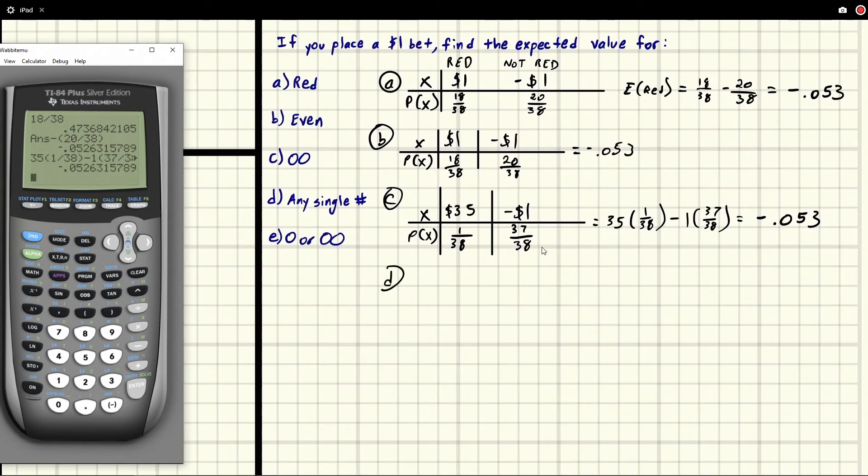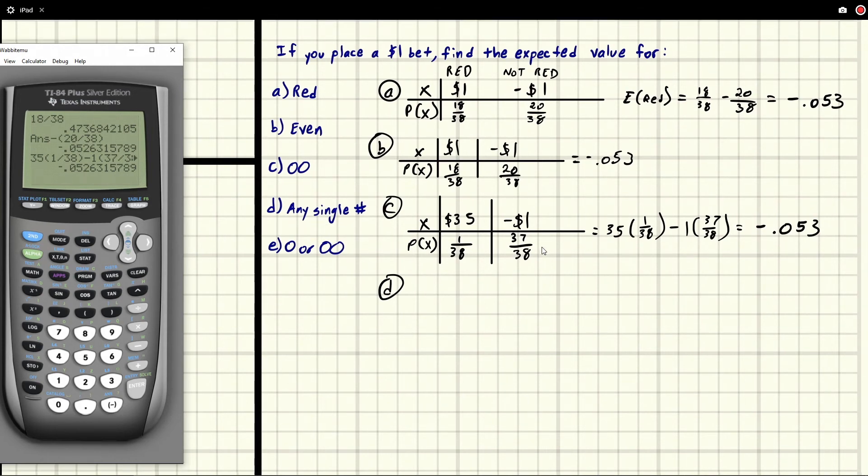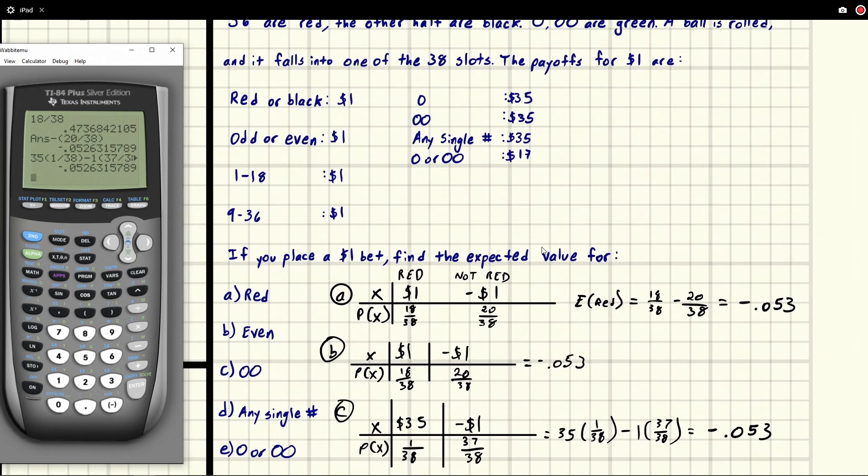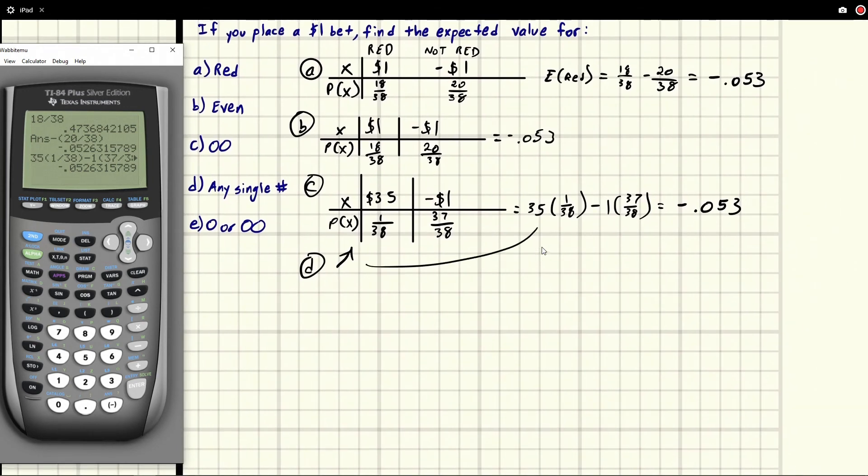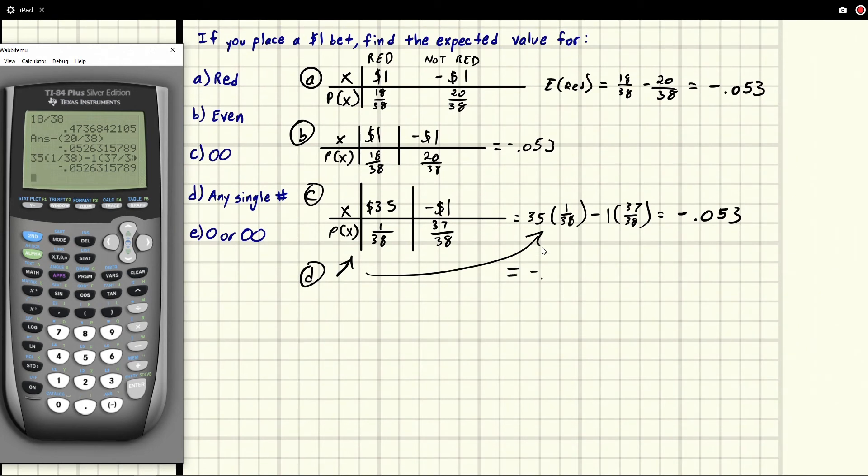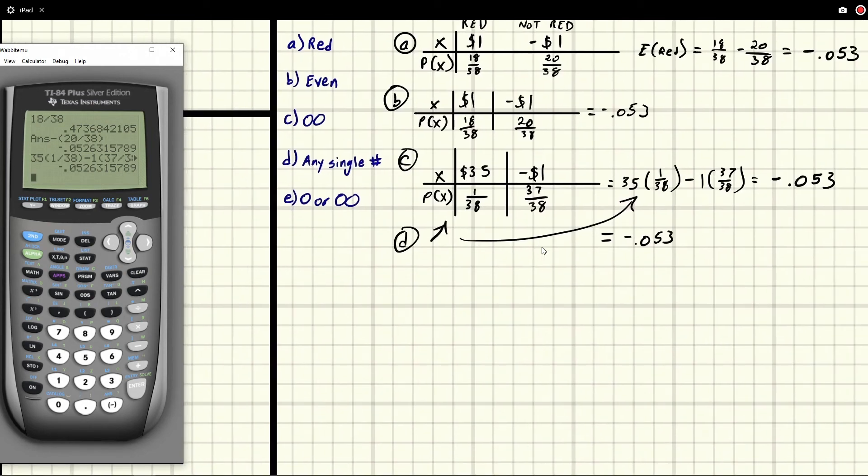All right, let's go to D. Well, any single number - well, double zero is a single number and the payoff is exactly the same as these. So all these would have the same probability if you were just betting on those, because the table would match. This would be the same. So this would equal the exact same thing, -0.053.